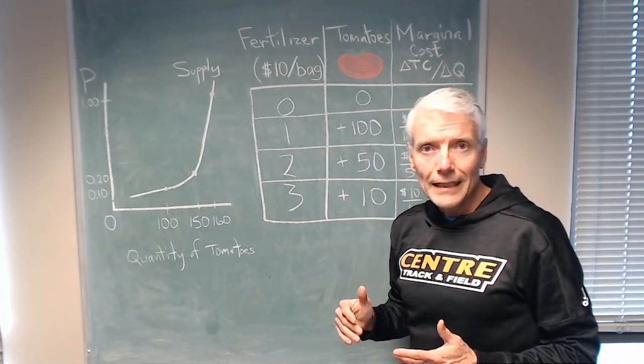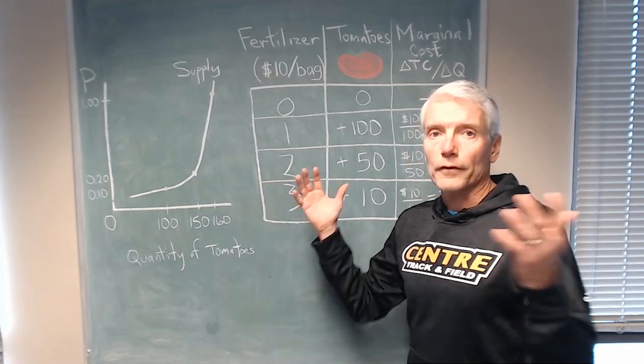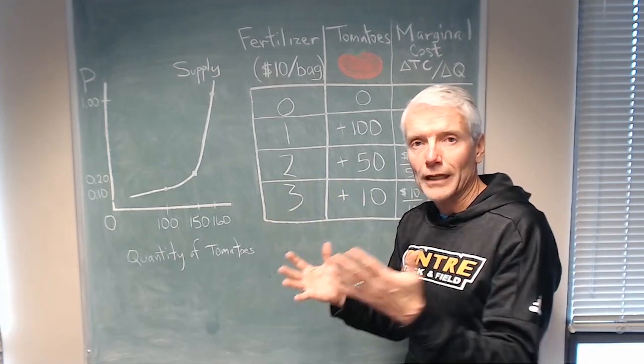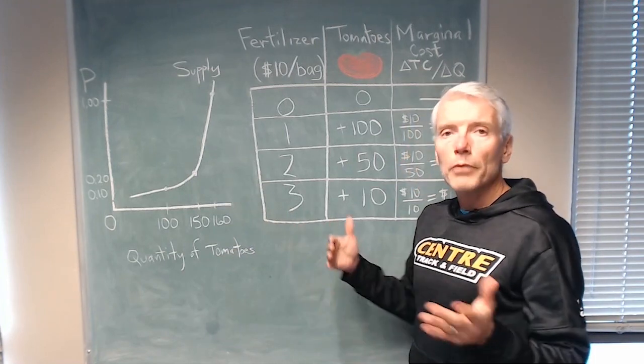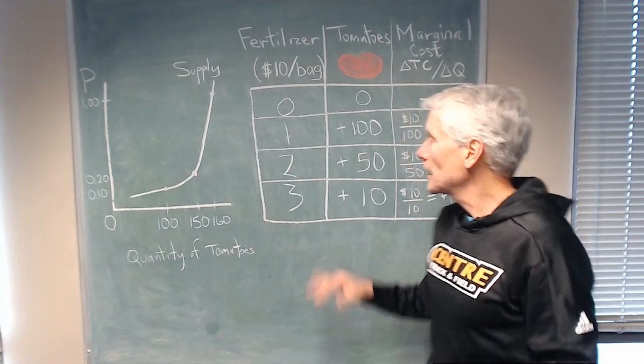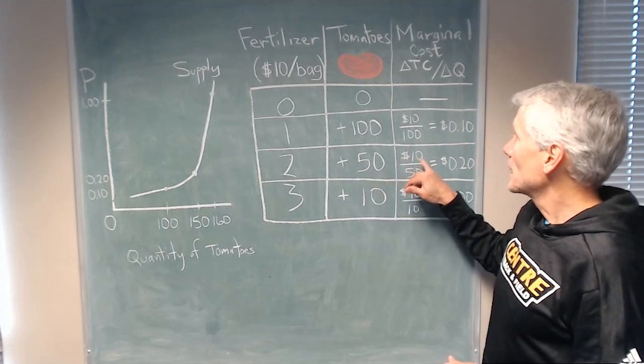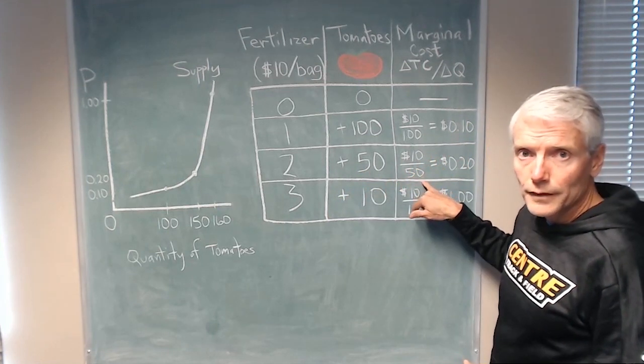Then you add a second bag. It's not the first enriching fertilizer that finally gets some nutrients to those tomatoes, but it does add 50 tomatoes. So you get another 50. The marginal cost is $10 divided by 50, so 20 cents per tomato.